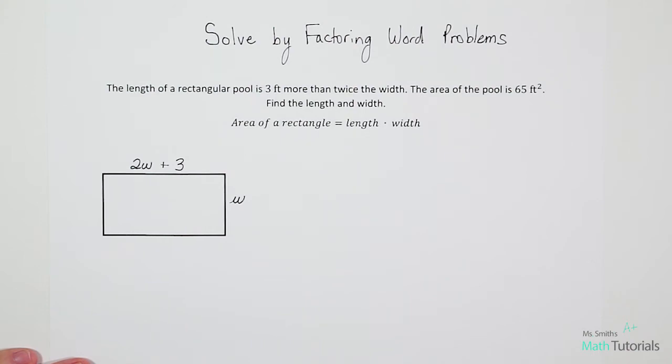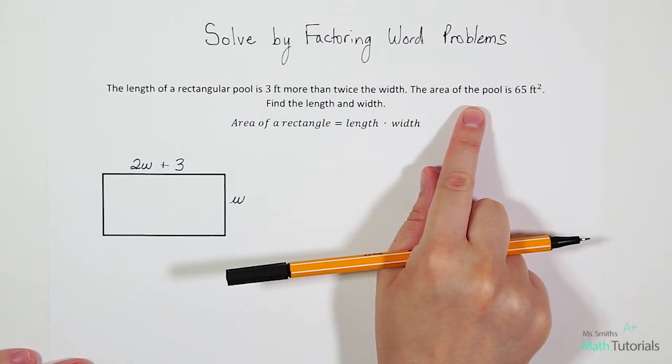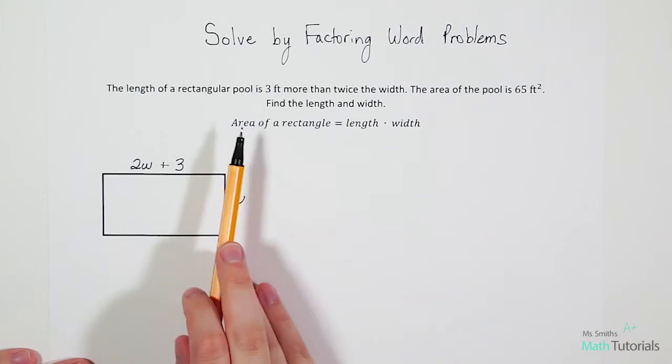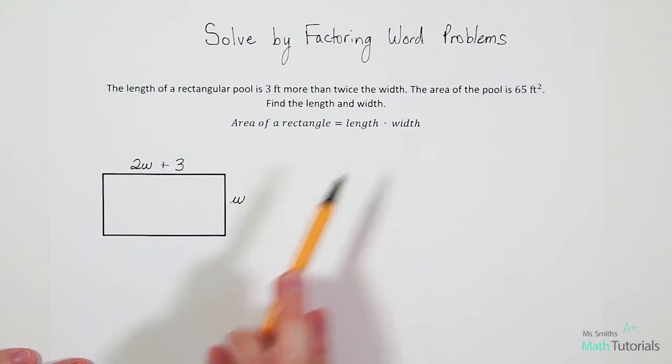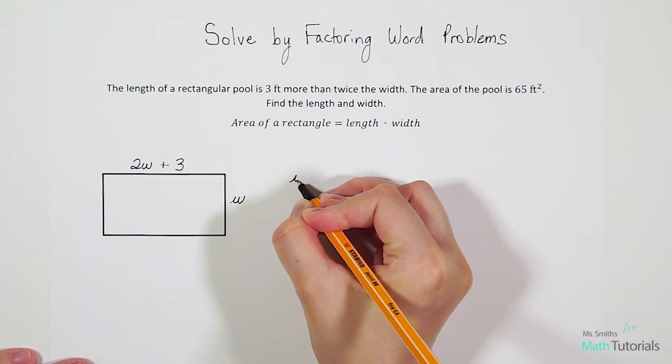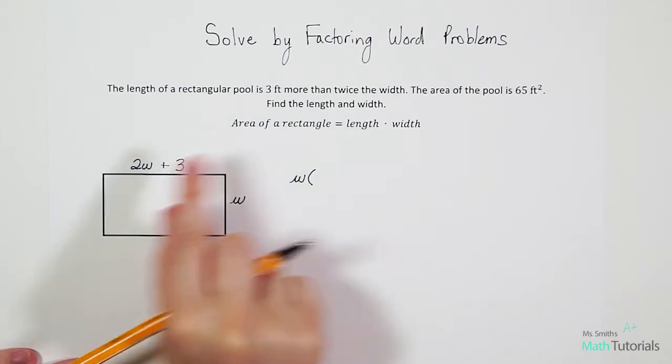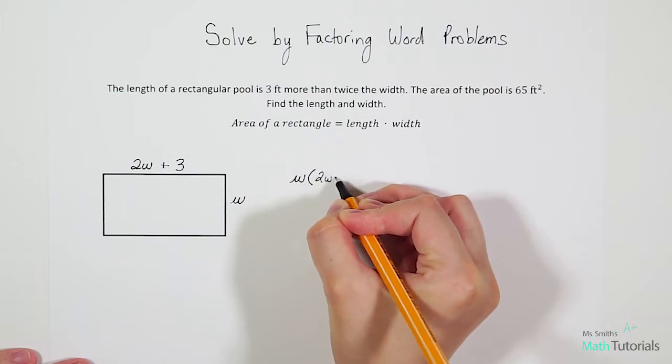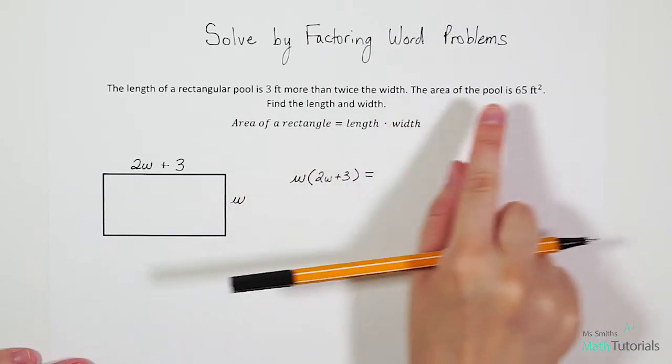So now that we have our sides labeled, we have our width labeled and our length labeled, they say that the area of the pool is 65 feet squared. And if we want to find the length and width, we have to set up an equation using this knowledge that the area of the rectangle is length times width. And for this particular problem, I'm going to switch this around and do width times length. And the only reason I'm doing that is I see that the width is a monomial. It's just one term. I know that'll be easier to distribute. It's just personal preference.